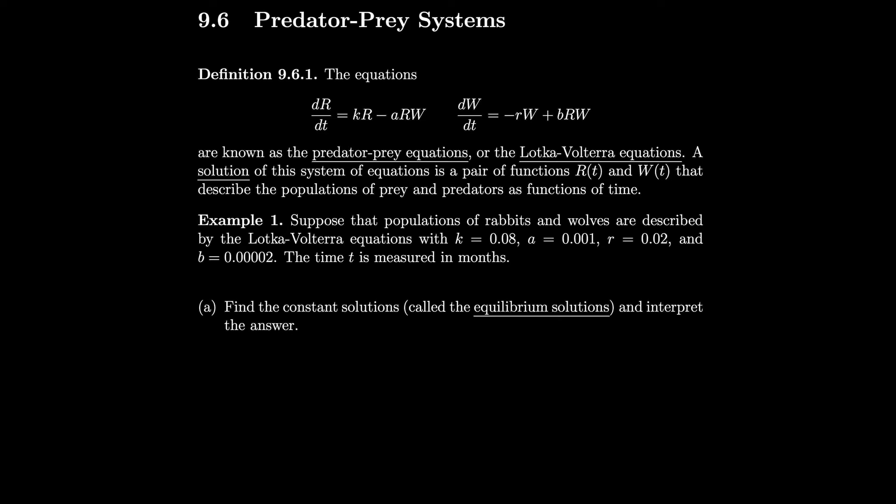Section 9.6 Predator-Prey Systems. The equations dr/dt and dw/dt are known as the Predator-Prey Equations or the Lotka-Volterra Equations. A solution of this system of equations is a pair of functions, r and w, that describe populations of prey and predators as functions of time.